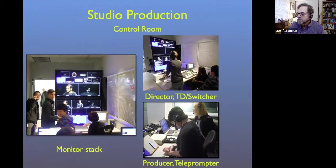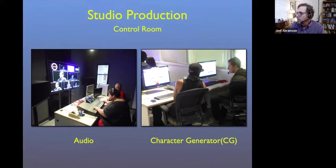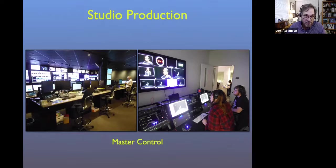Our monitor stack is where we see all of our monitors. The TD — the technical director — sits over here, the director making the calls right here. In the back we have our producer and our teleprompter. These are all locations in our control room. Also off to the side of the control room, we have our character generator, our CG people, and we have the audio room in the back. And don't forget, we also have master control. Master control at our place in the ATC room is kind of small, but it does the switching it needs to do.